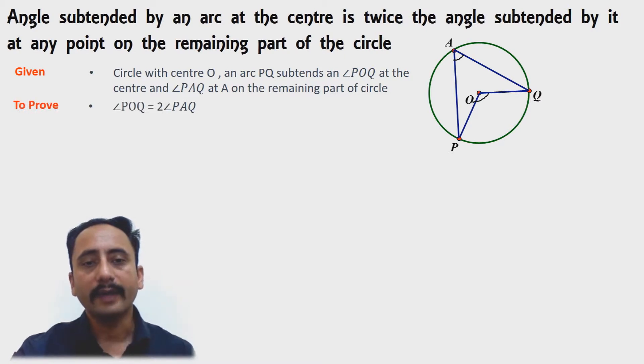Now what we are going to prove is that angle POQ is twice angle PAQ. For this, I need to do a construction: I will join AO and extend it to point B.